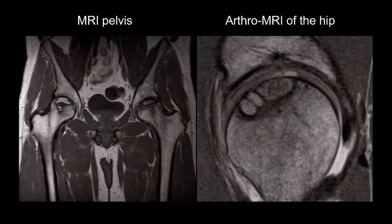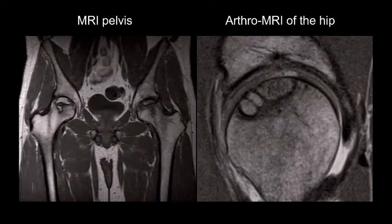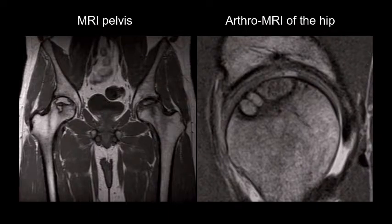The standard for evaluation of AVN is a standard MRI of the pelvis, as you can see here. These are the MRIs that we usually get because somebody has some risk factors and the general practitioner refers them to an MRI of the pelvis. And this is not accurate enough.